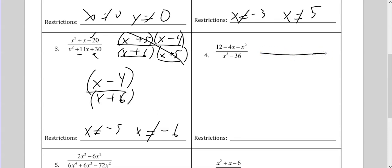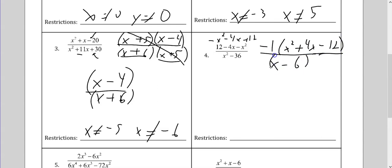For this one, I'm going to rewrite this as negative x squared minus 4x plus 12, putting it in descending order. Next, I'm going to take the negative 1 out — it's always easier to factor x squared. So that's going to make the x squared positive, the 4x positive, and the 12 negative. On the bottom, I'll factor this as x minus 6, x plus 6.